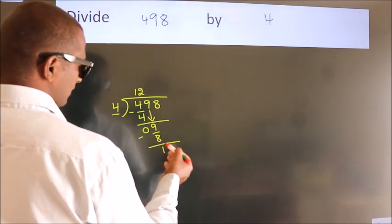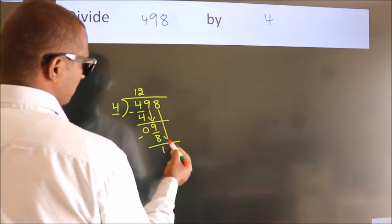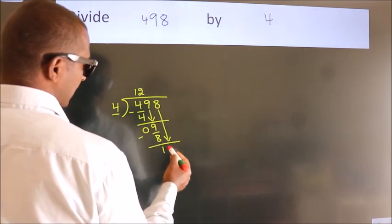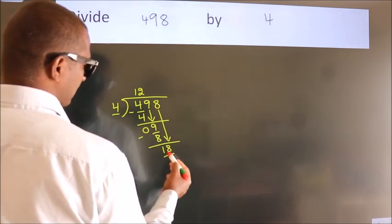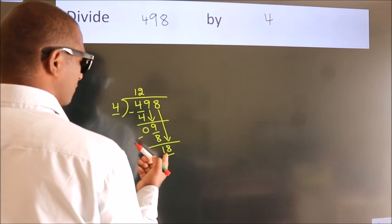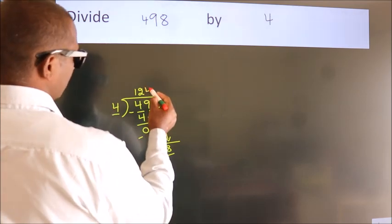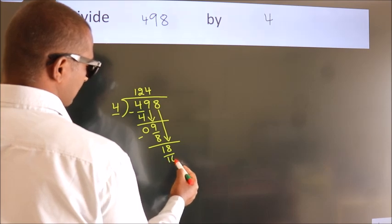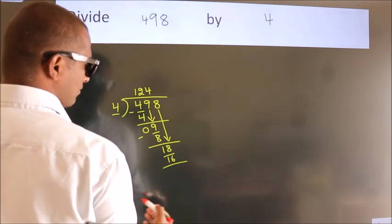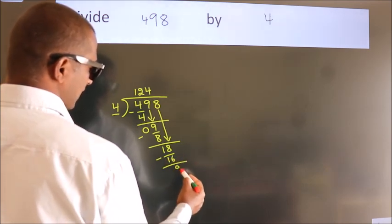After this, bring down the beside number, so 8 down, so 18. A number close to 18 in the 4 table is 4 fours, 16. Now we subtract, we get 2.